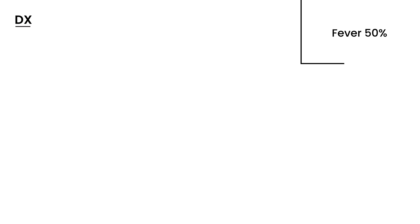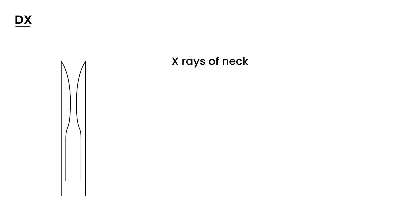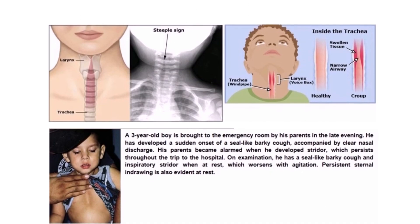How do we diagnose croup? Other than the classic symptoms like the barking cough and inspiratory stridor, you do x-rays of the neck. When you do neck x-rays, you can actually see the airway narrowing — and that has a special name: it's called the steeple sign, presumably because the steeple shape looks like that triangular narrowing. Here is a neck x-ray showing the steeple sign — you can see it has that triangular shape, which is directly the result of this narrowing of the airway.